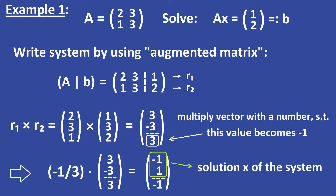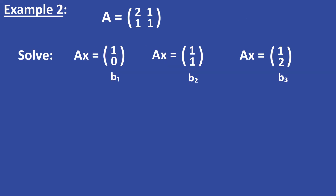Let's take a look at another example. I will show you how you can solve easy linear systems one after another by using the cross product. We have a 2x2 matrix A and we want to solve three linear systems all in one go. The determinant of A is equal to 2 times 1 minus 1 times 1, which is equal to 1, and this is not equal to 0, so this is all right. The non-zero determinant also guarantees that all of the linear systems are solvable.